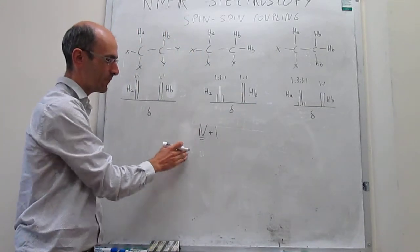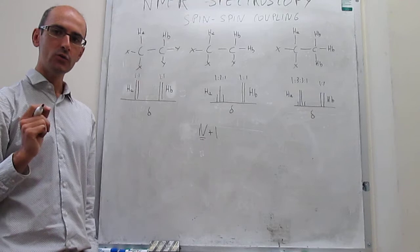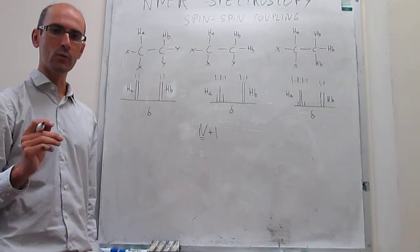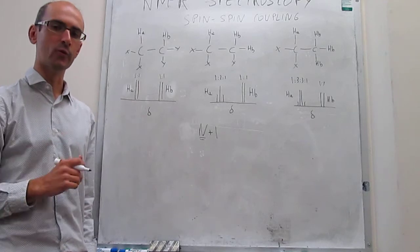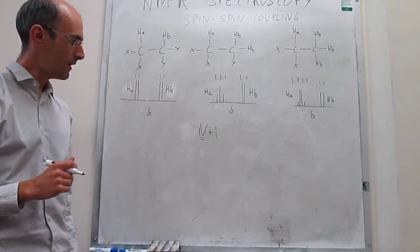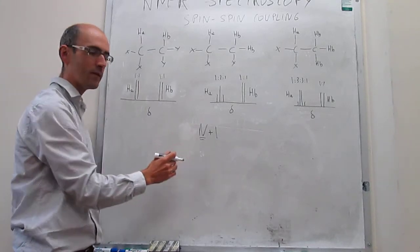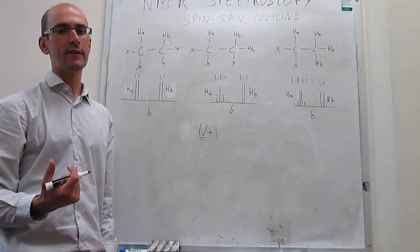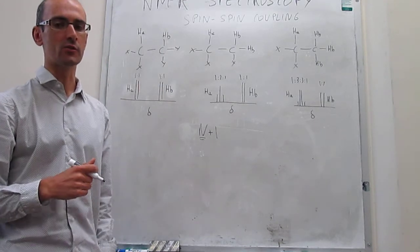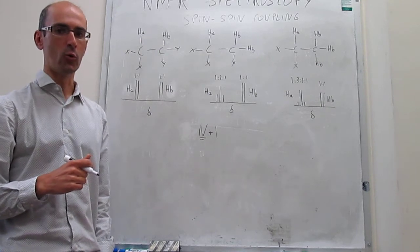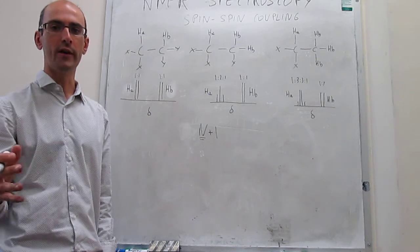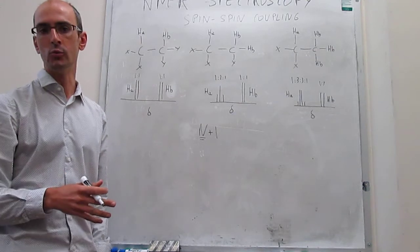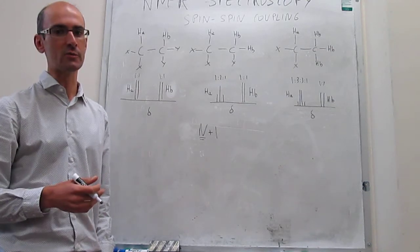We can always use the N plus one rule to predict whether the signal of a particular NMR-active nucleus will be a singlet, doublet, triplet, quartet, or what have you. This only applies for NMR-active nuclei that are within three bonds. If you have other NMR-active nuclei that are beyond three bonds, we assume there is no splitting.